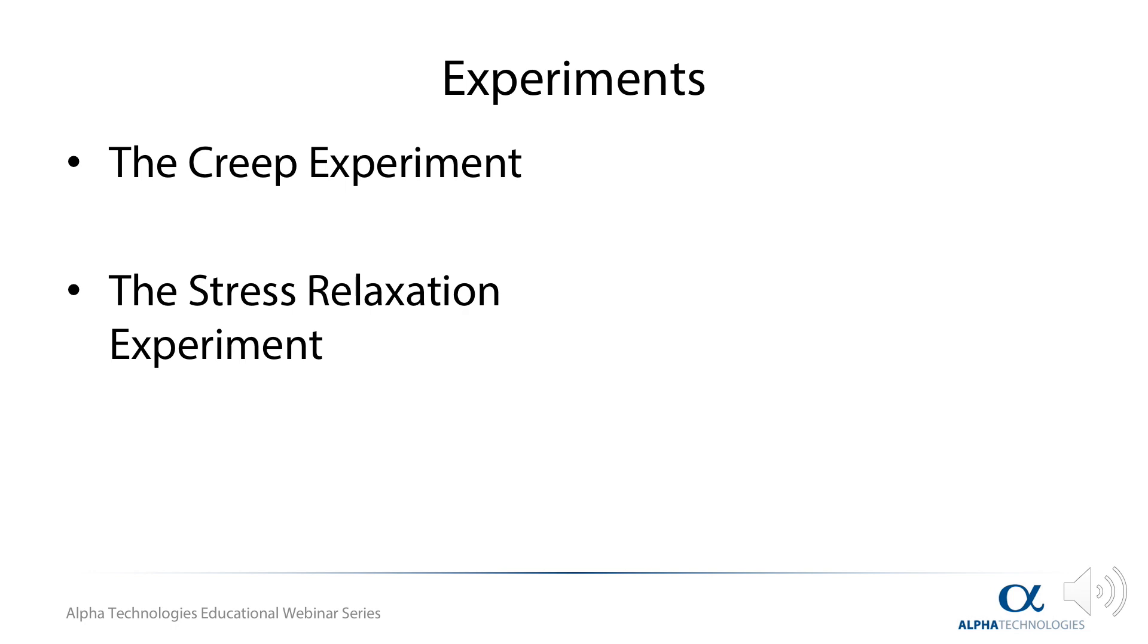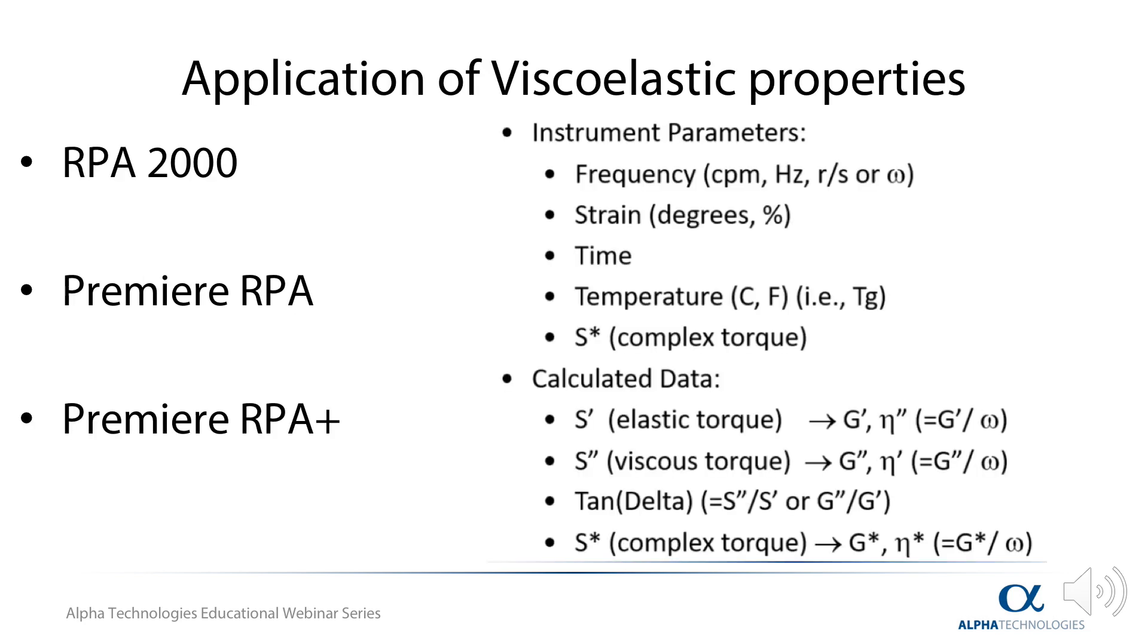Similarly, the Maxwell model, which is represented by a spring and dashpot in series, is good for predicting stress relaxation behavior.